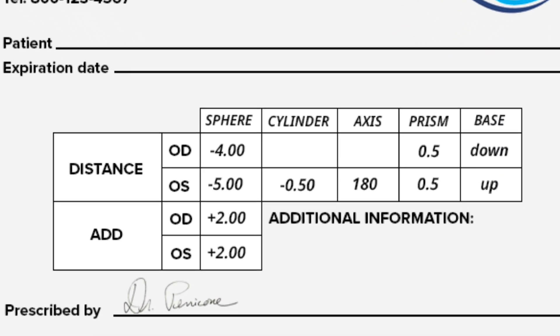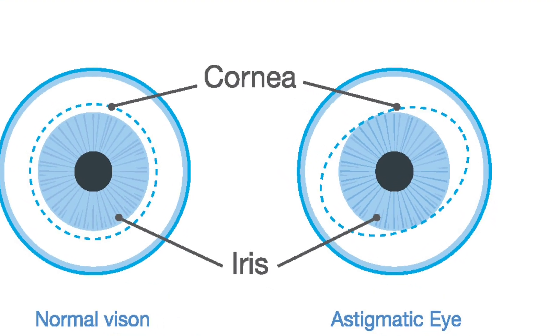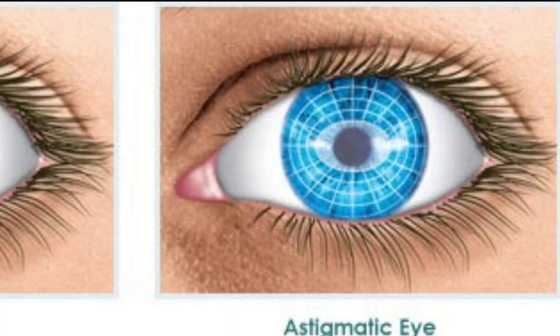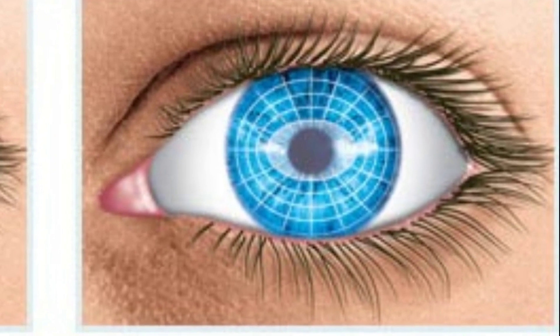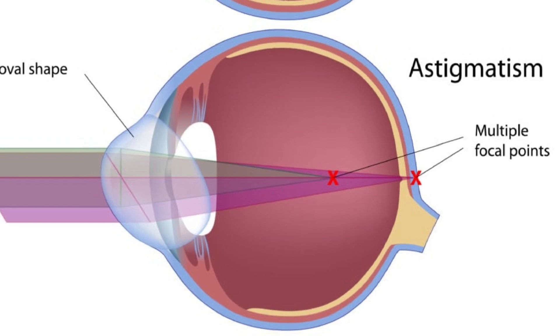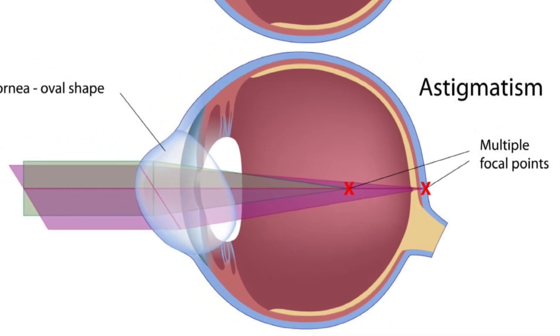First part of the prescription down. The second part is CYL or cylinder. This describes whether or not you have astigmatism. Astigmatism means that your eye isn't shaped symmetrically. It could be a little oblong, so it could be shaped more like a football instead of a sphere. Because of that, it focuses light differently in different perpendicular directions.